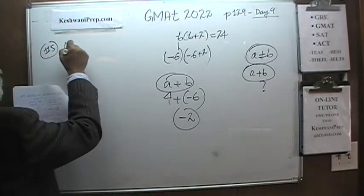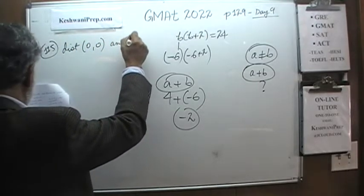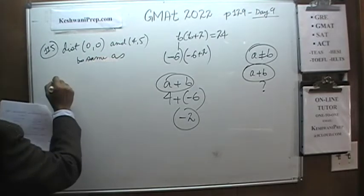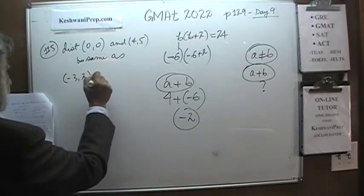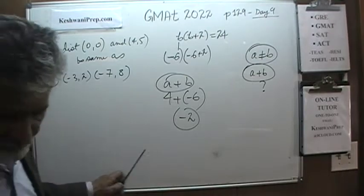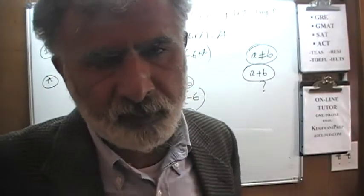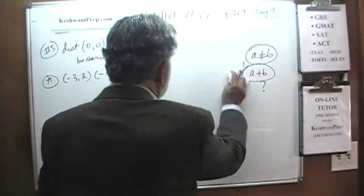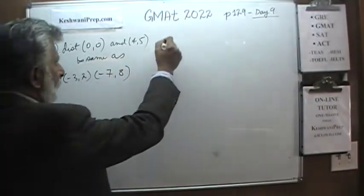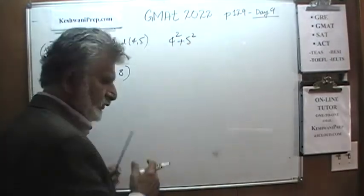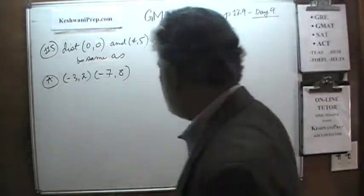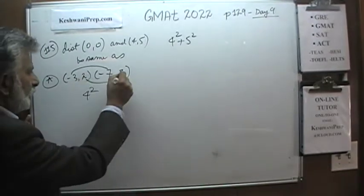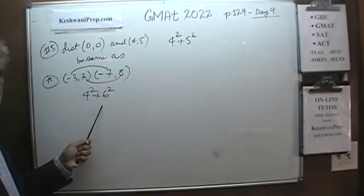In problem 115, we are told that the distance from the origin to the point (4, 5) is the same as the distance between which pair of points? We have 5 answer choices. The distance from origin to (4, 5) is simply the square root of 4 squared plus 5 squared, which equals 41. For answer choice A — points (negative 3, 2) and (negative 7, 8) — the horizontal distance is 4 but the vertical distance is 6. That won't do; A is not the answer.